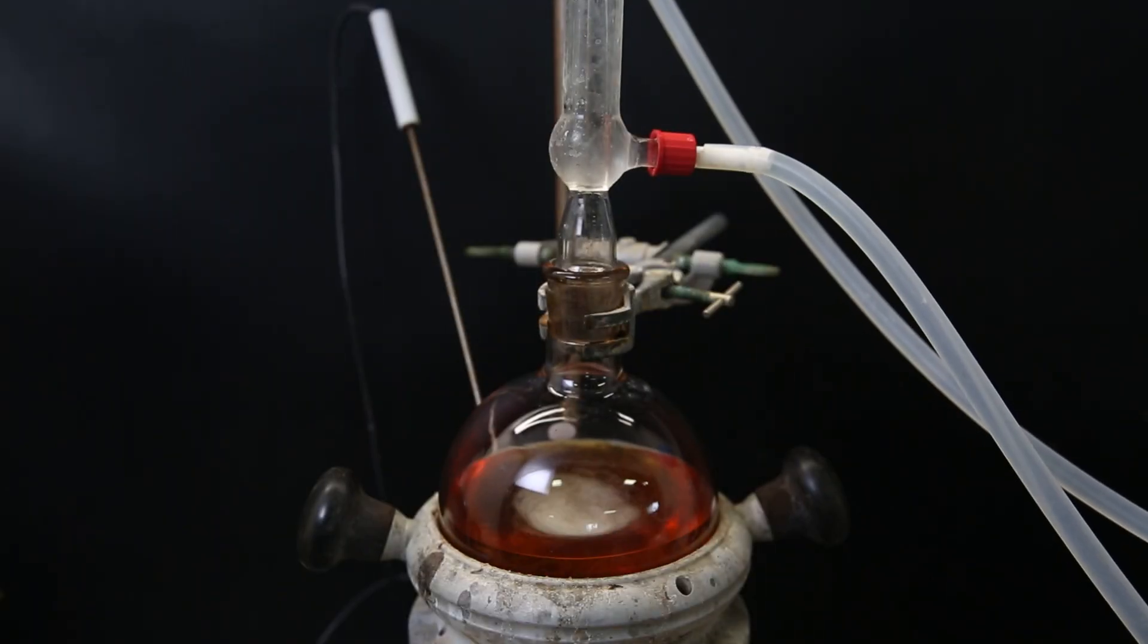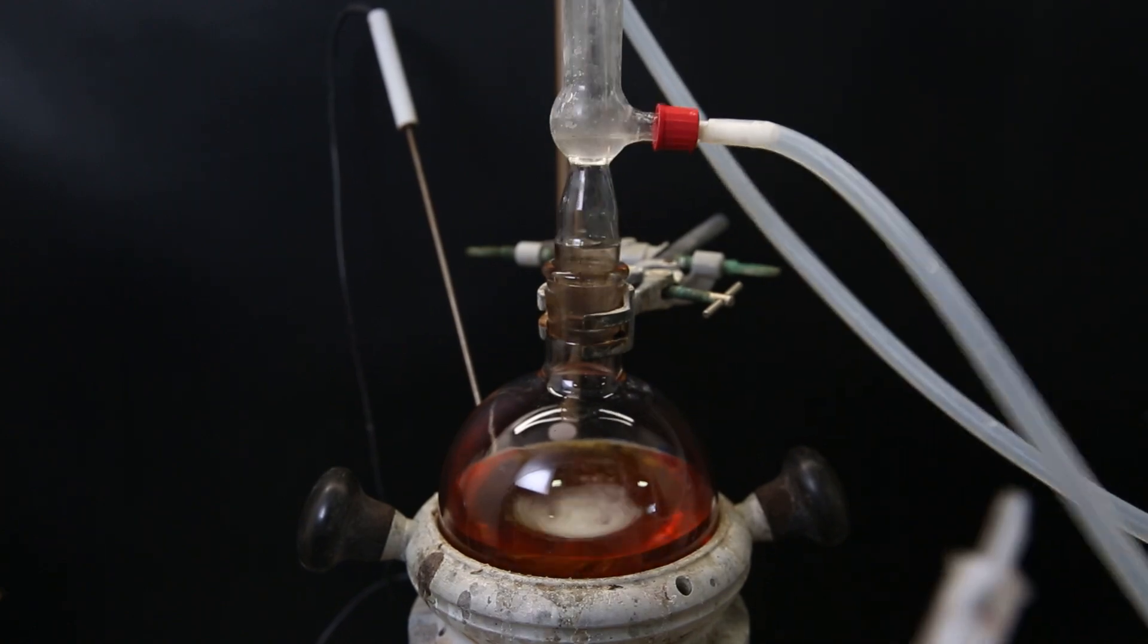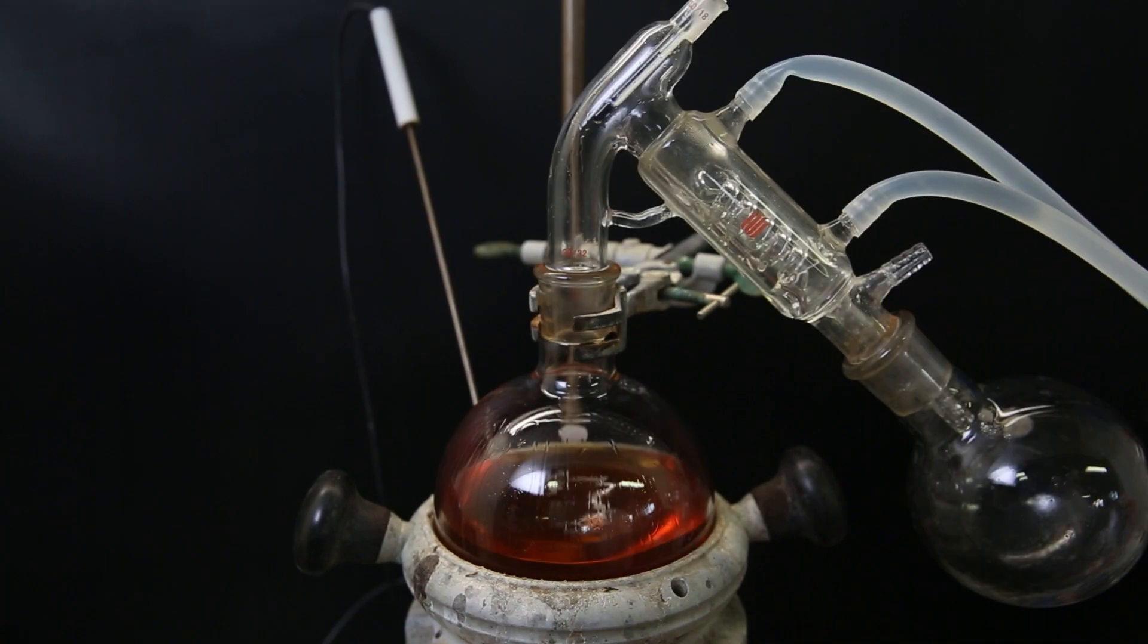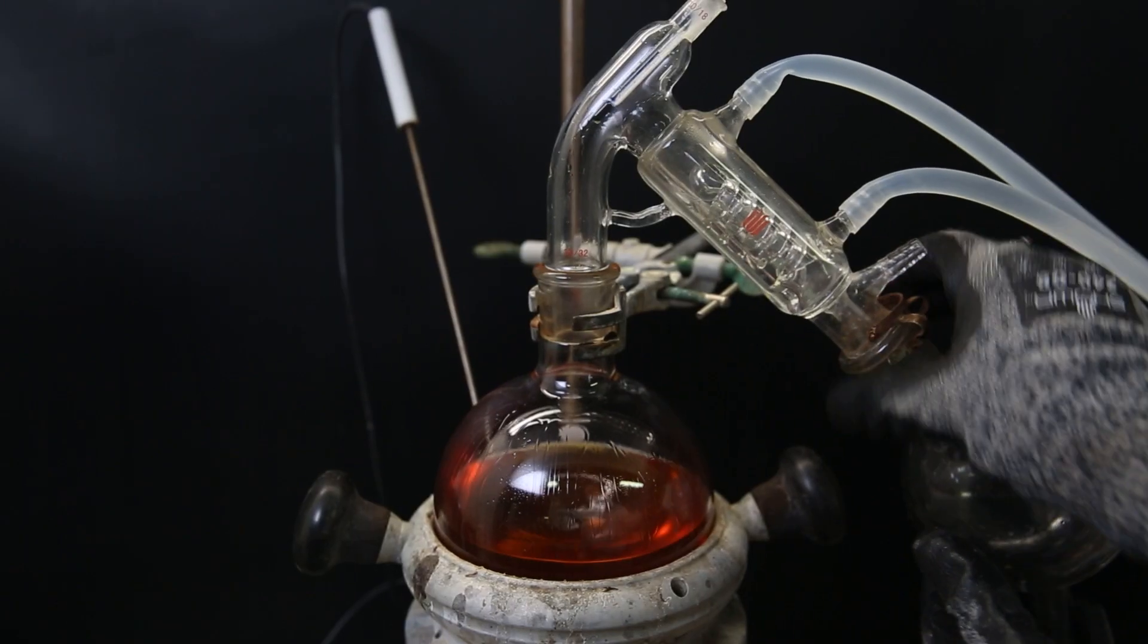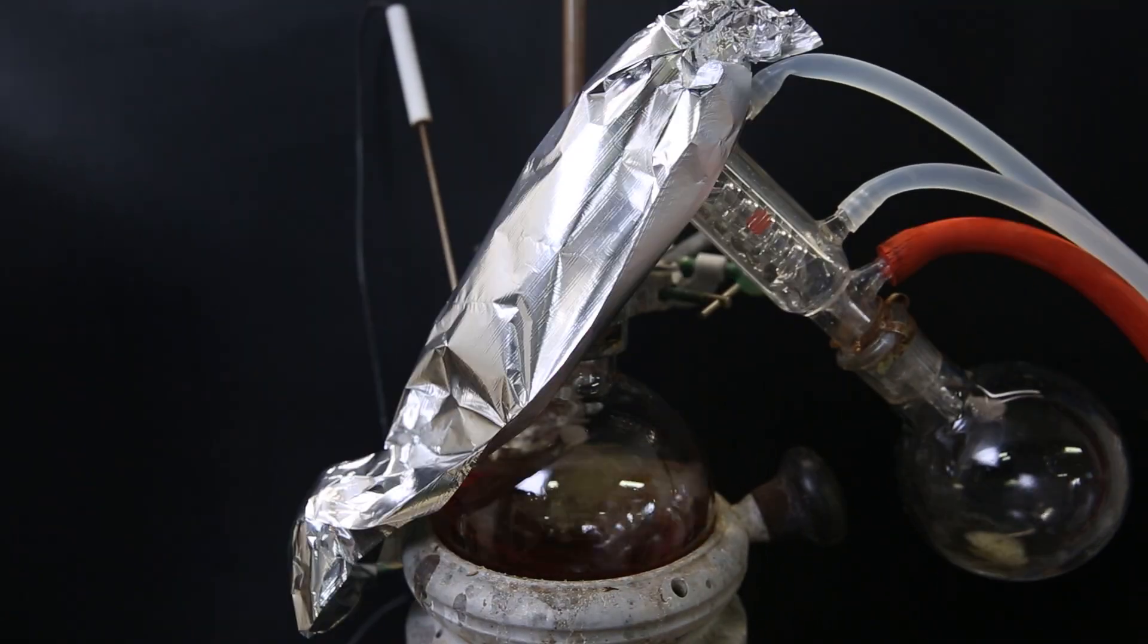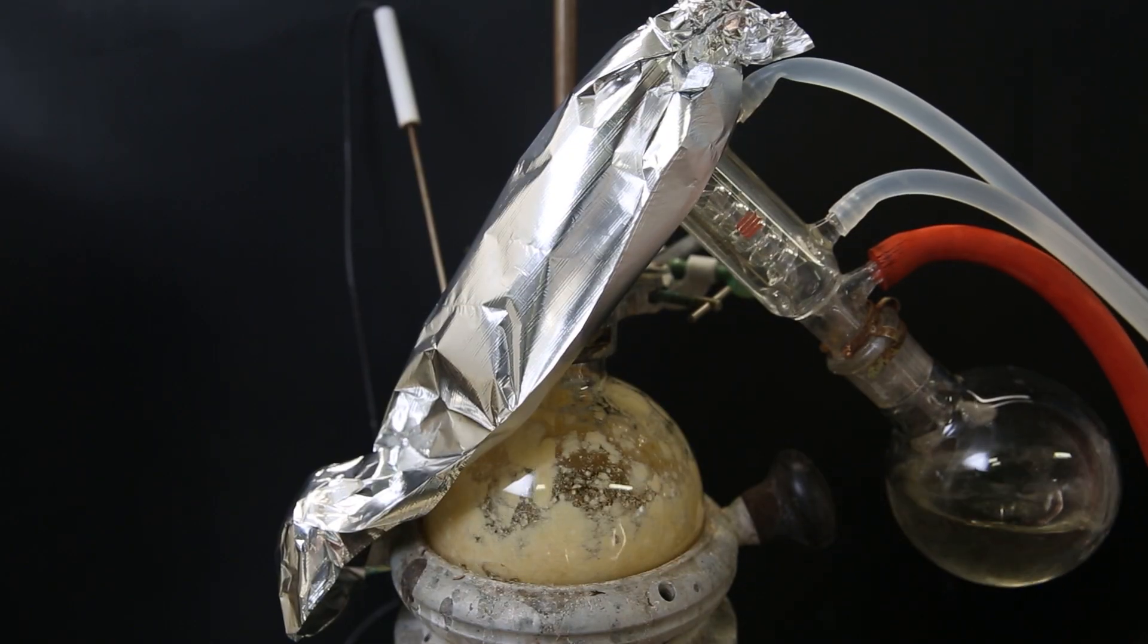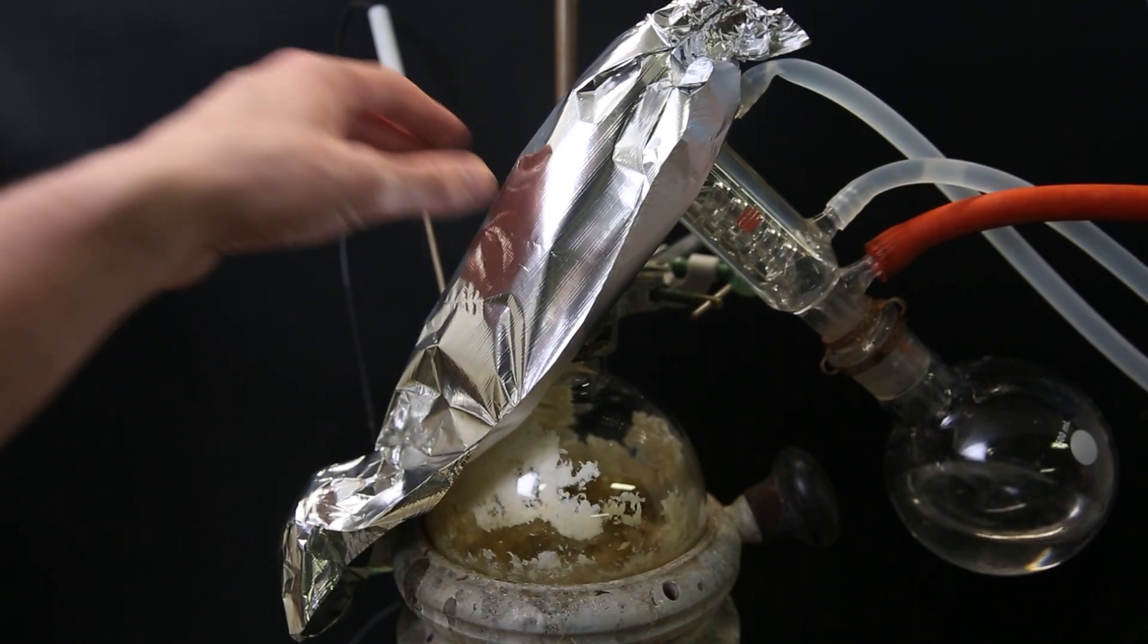When I return the next day, the mixture looks the same, but the reaction should be finished. I immediately remove the condenser and quickly replace it with a short path distillation apparatus. I then let it cool down a bit and vacuum distill over all the solvent. I pull out the last bit with a stronger vacuum, and what is left behind is a yellowish solid.